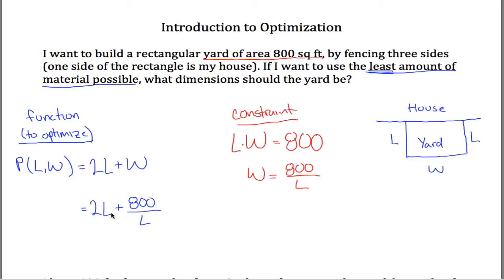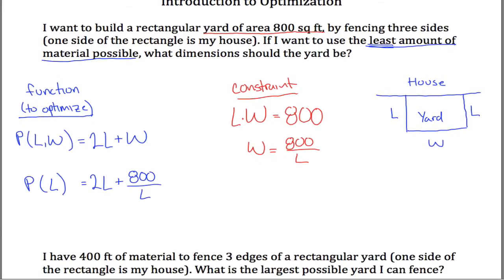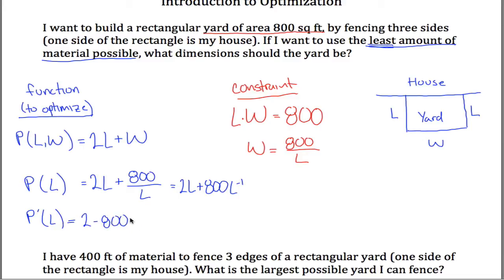The advantage of this form is it only has one variable, so I can write P(L) = 2L + 800/L. To take the derivative, I rewrite 800/L as 800L⁻¹. The derivative is P'(L) = 2 − 800L⁻².